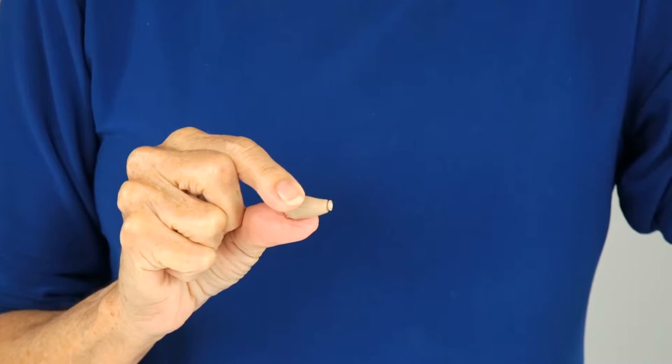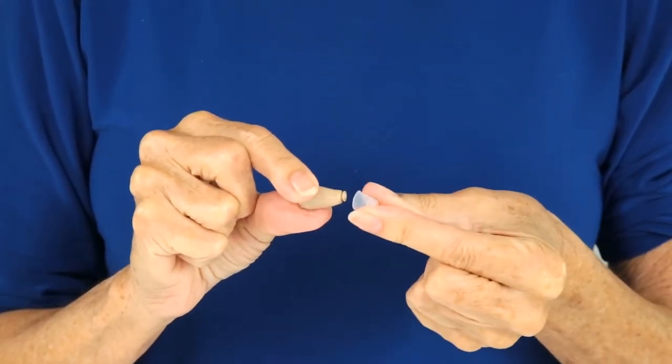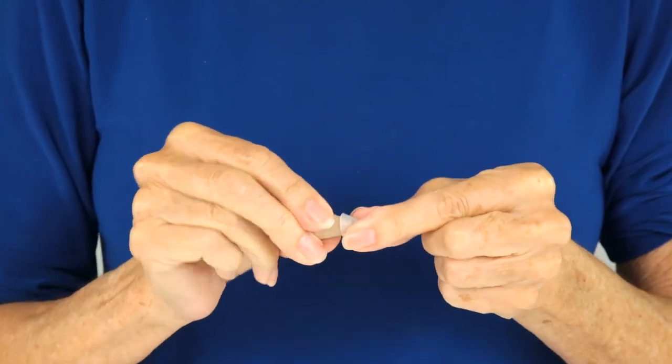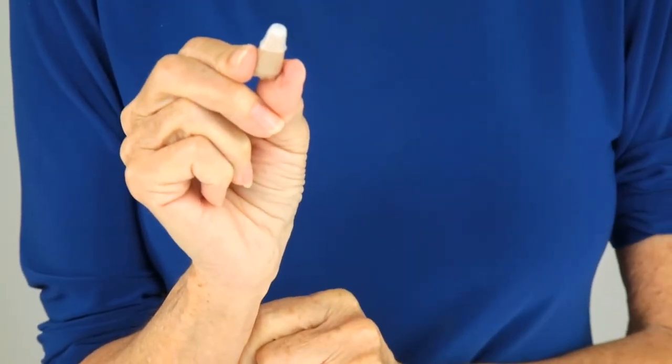To put on the new cap, fit the wide end of the silicone tip over the open end of the hearing amp. Press the cap down to ensure a secure fit before fitting the amp into your ear.